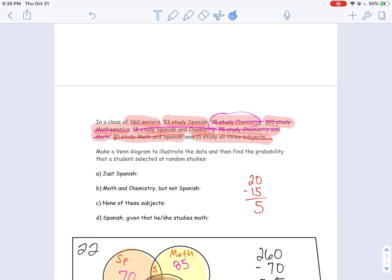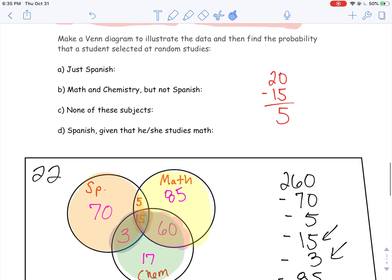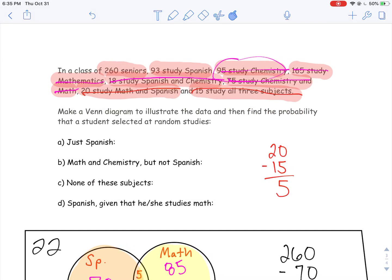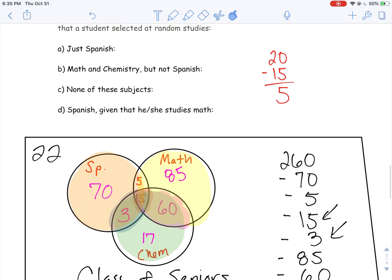But look for that intersection of all three, like I did here, and then work your way back. You'll notice what I did was I started with the 15 for all three. And then I looked at the 20 who took math and Spanish, the 75 who took chemistry and math, the 18 who took Spanish and chemistry. And then I was able to work with the 165 who studied math.